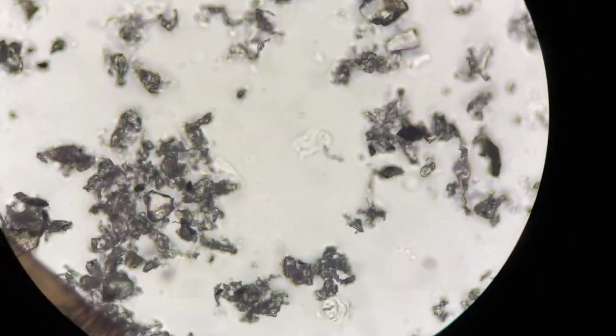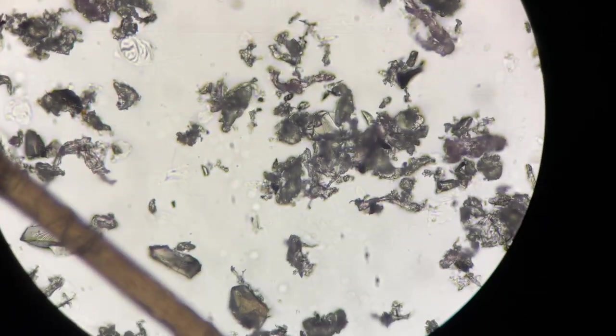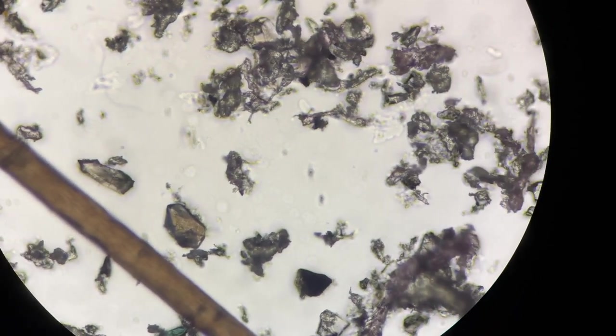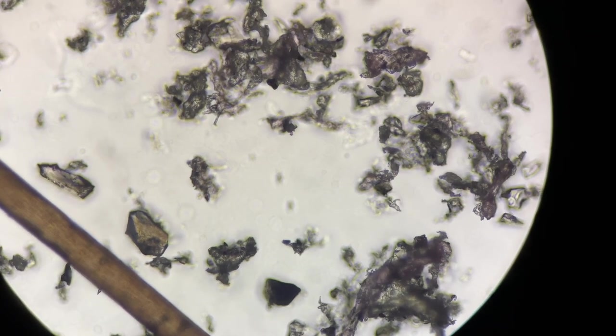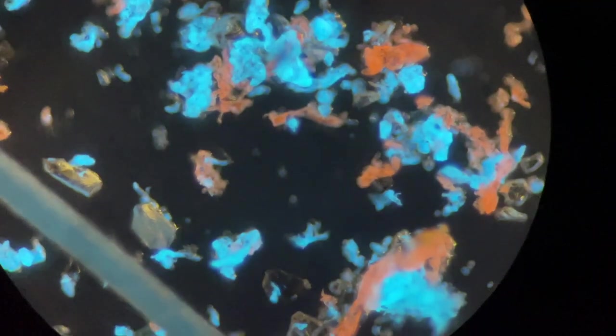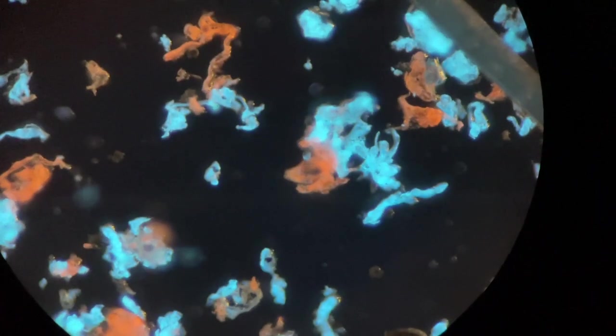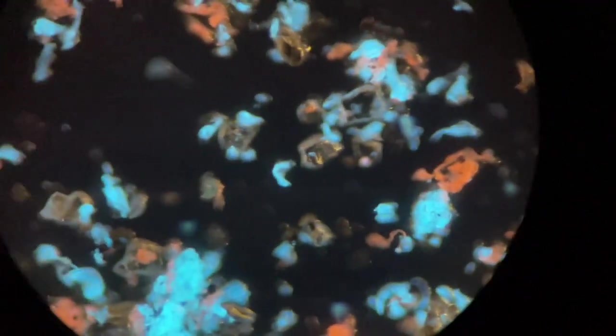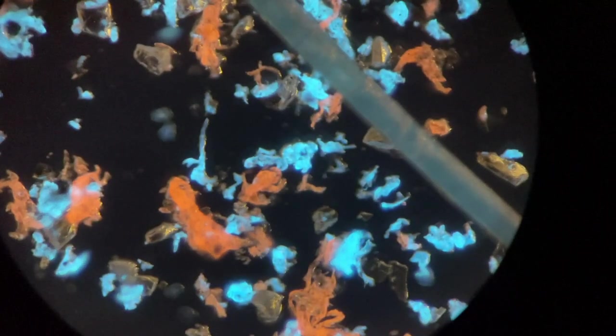So again this is just bright field, just normal light. If we switch to fluorescence light, you can see quite a lot taking into account that the human hair is around 70 microns, so you can see those particles are relatively big, they are around 50 or more microns.